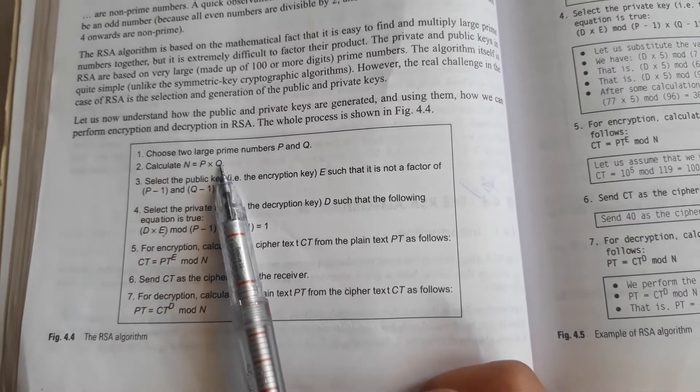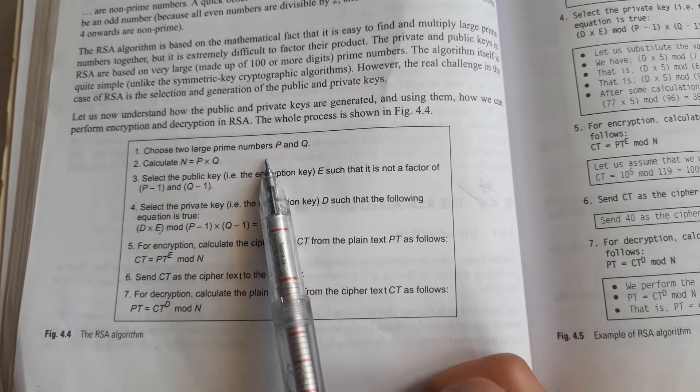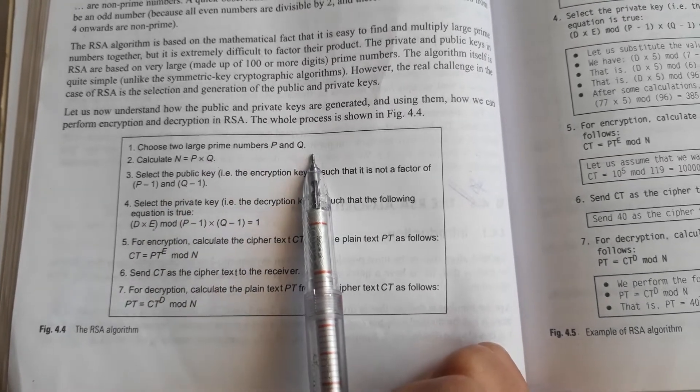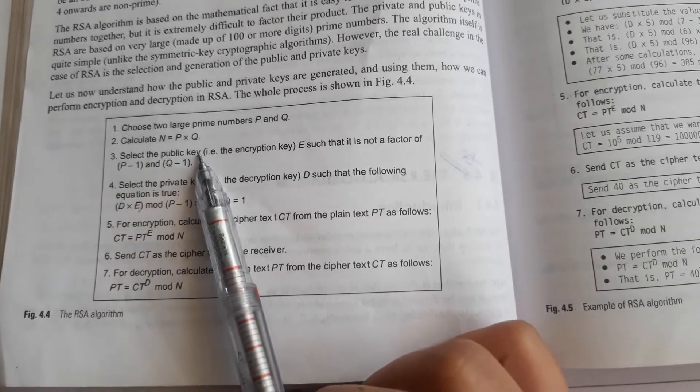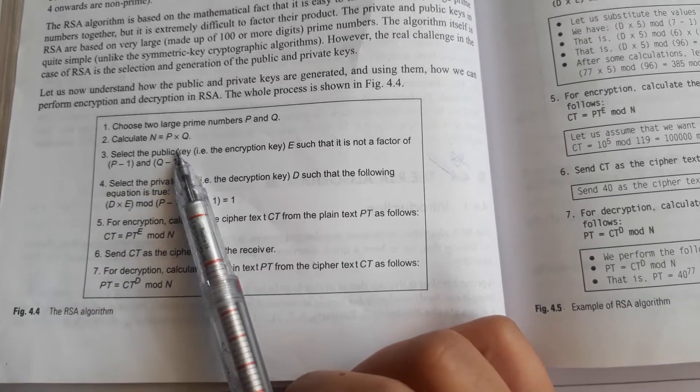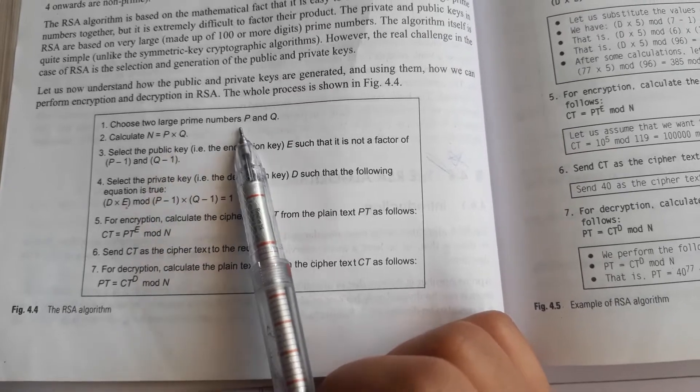In the second step we calculate n. So n will be calculated by multiplying p and q both.